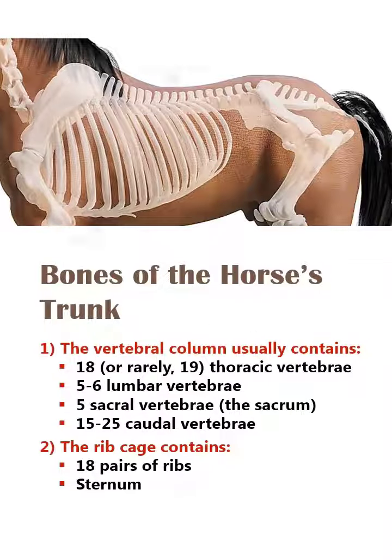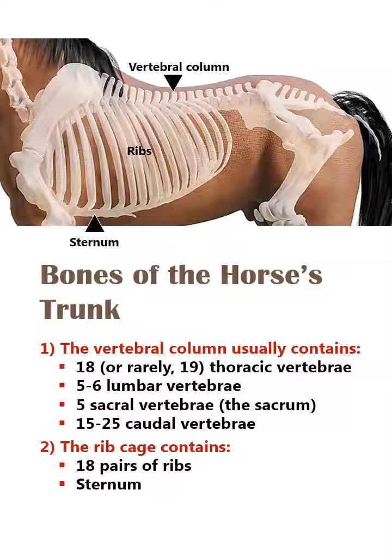In the trunk of the horse, usually there are 18 thoracic vertebrae, 5–6 lumbar vertebrae, 5 sacral vertebrae, and 15–25 caudal vertebrae. The ribcage contains 18 pairs of ribs in addition to the sternum.